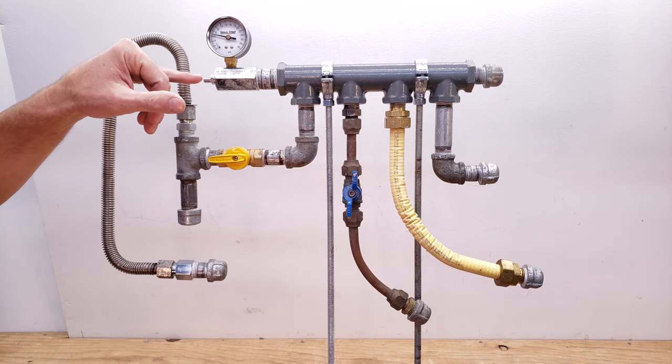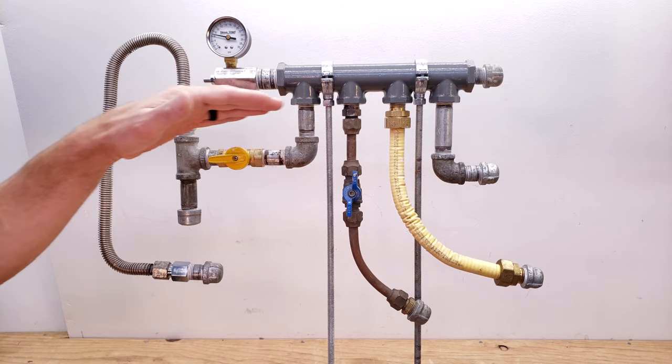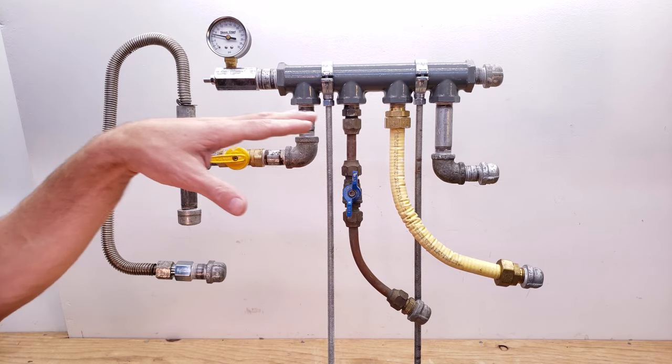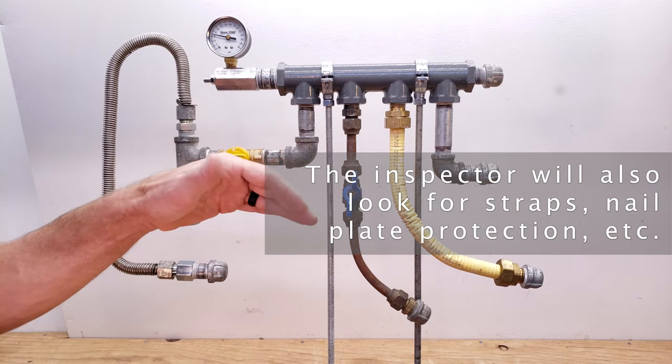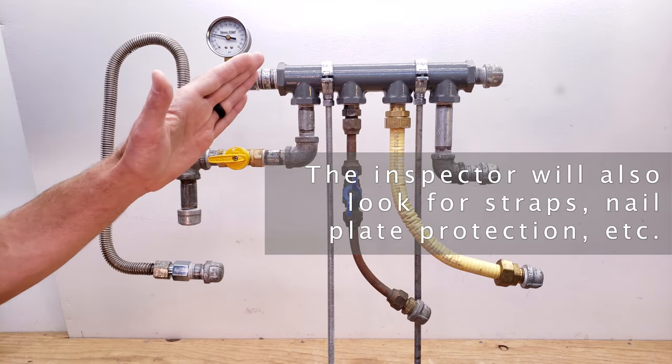But when the inspector comes out, they're usually going to press in on this, see if the pressure falls. They're going to go and take a look at where the ends of your gas lines are, make sure that they're close to where the appliances are supposed to be at, and that's how they're going to inspect this.